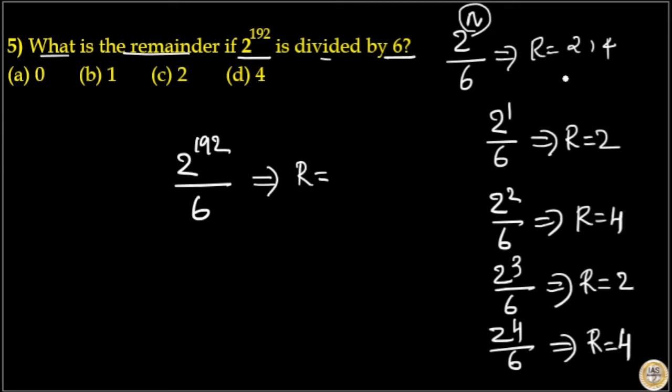Here if n is odd, you will get the remainder as 2, and if n is even, you will get the remainder as 4.